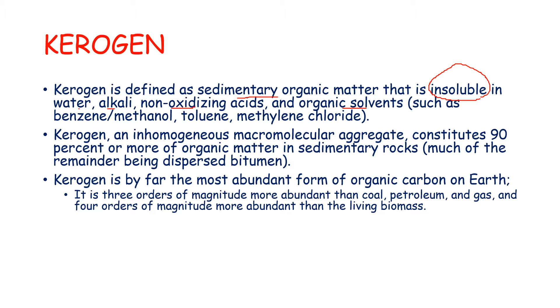Kerogen is an inhomogeneous macromolecular aggregate, meaning it is not having the same chemical composition in all points. Macromolecular means basically it has more than one type of molecule. It makes up about 90% or more of organic matter in sedimentary rocks, much of the remainder being dispersed bitumen.